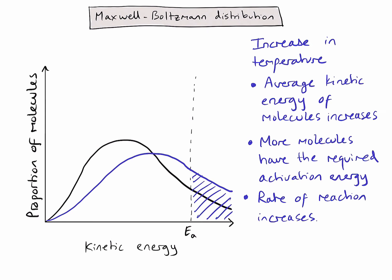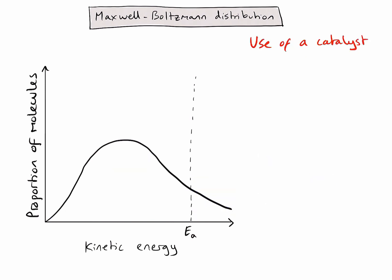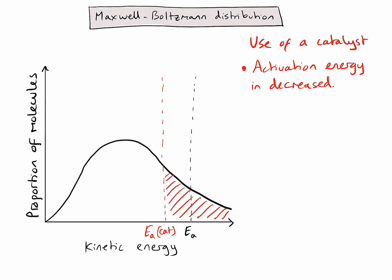Let's consider how using a catalyst affects the shape of this graph. Using a catalyst doesn't change the number of molecules, nor does it change the kinetic energy of molecules. What it does do is decrease the activation energy. So let's mark a new activation energy on my graph. By decreasing the activation energy, the shaded area to the right of my dotted line has increased. So once again, more molecules have the required activation energy, and I would expect to see an increase in the rate of reaction.